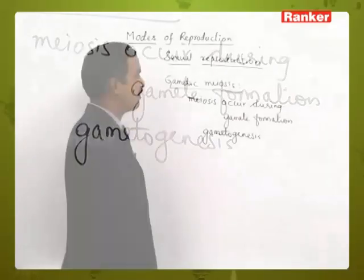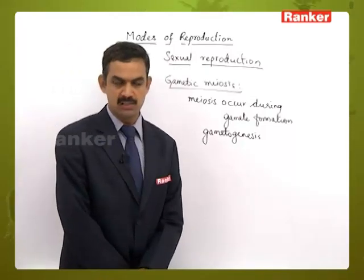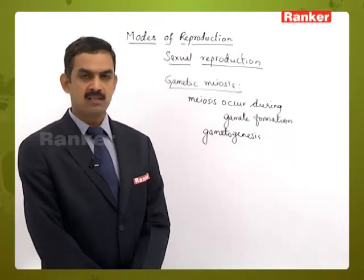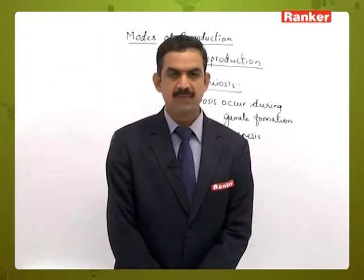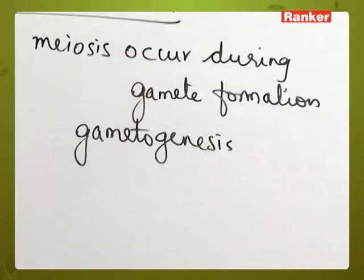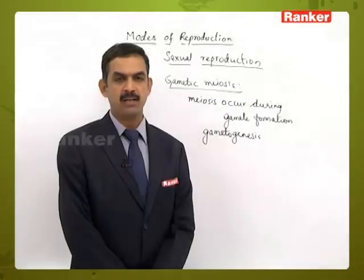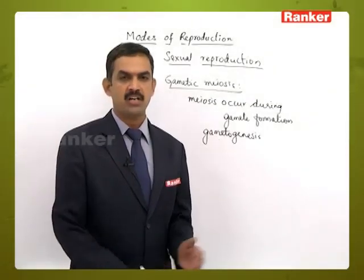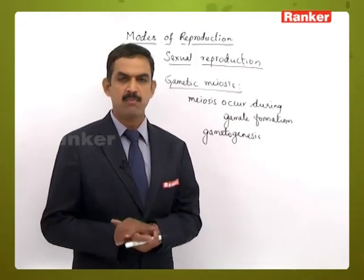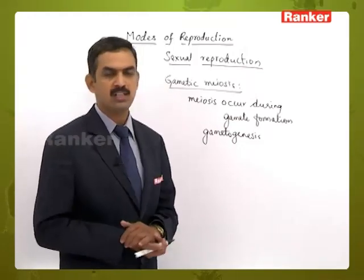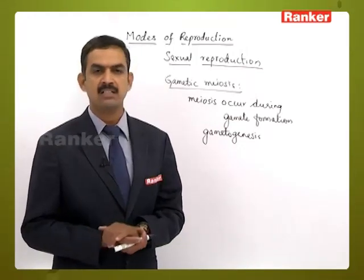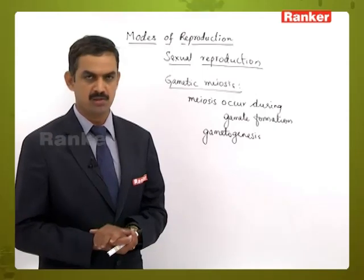During gametogenesis, if meiosis occurs, we call that gametic meiosis. The stage of the life cycle at which meiosis takes place determines the ploidy of the organism. The three types are zygotic meiosis, sporic meiosis, and gametic meiosis.